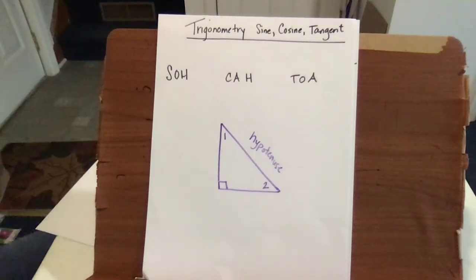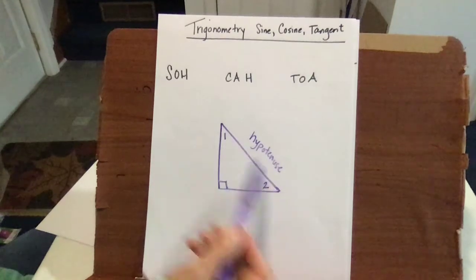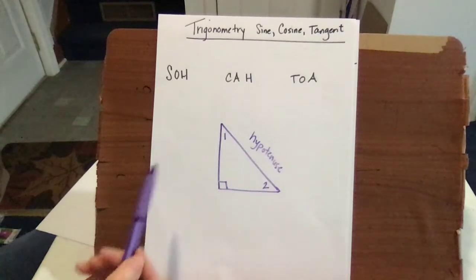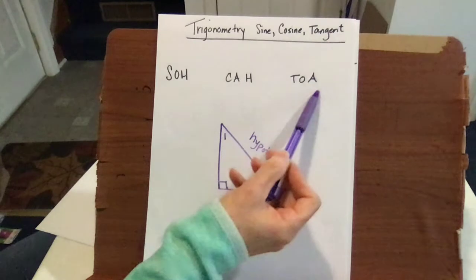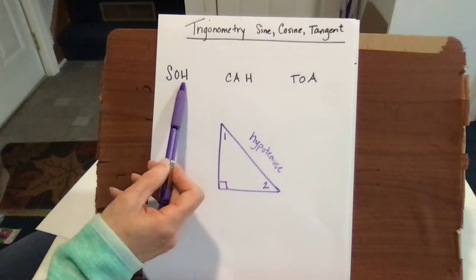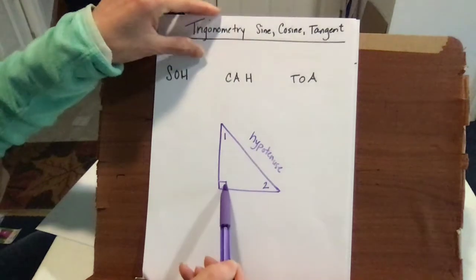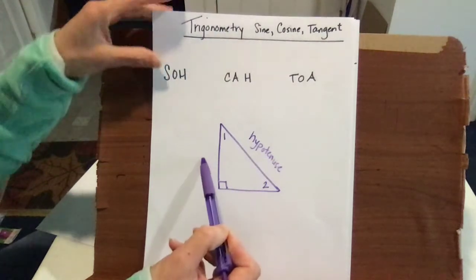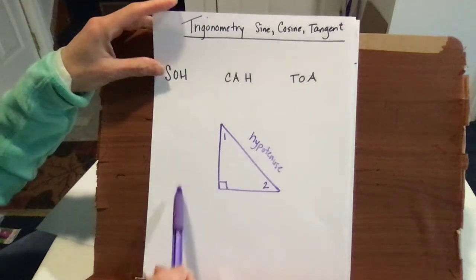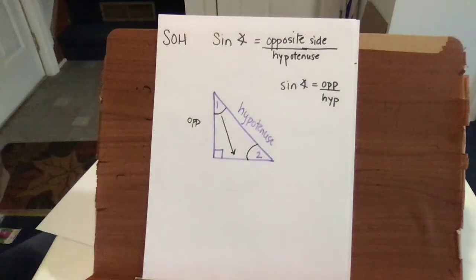Today we're going to be looking at the sine and cosine ratios and finding angles and missing side lengths. Trigonometric functions sine, cosine, and tangent are used to help you find the side or angle measure of a right triangle. We've used tangent already, which involved opposite and adjacent sides. Sine and cosine will involve either the opposite and hypotenuse, or for cosine, adjacent and hypotenuse. Your hypotenuse is always opposite your 90-degree angle, and which sides are opposite depends on which trig function we use.